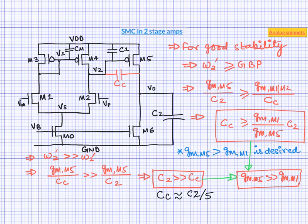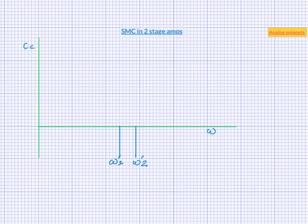A good way to visualize this situation is to plot pole and zero location as we change the compensation capacitor from a very low value to very high value. So it is a log-log curve where we have frequency in the logarithmic scale in the x-axis and compensation capacitor in logarithmic scale in the y-axis.